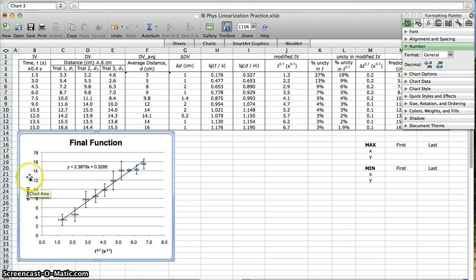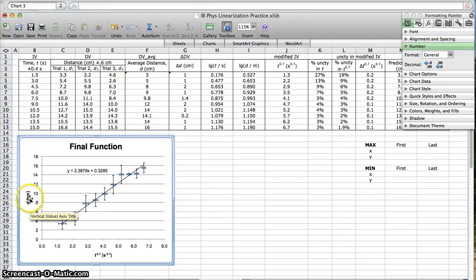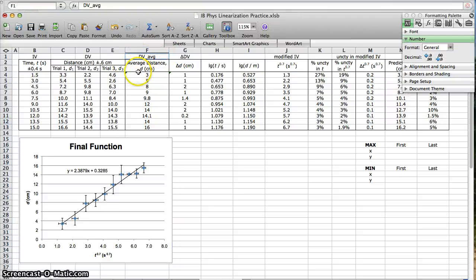This has the average dependent variable on the y, so d in centimeters. Where's that? D in centimeters. Oh yeah, that's my average dependent variable, the average of the three trials. That's on the y-axis. The x-axis is the modified independent variable, time to the 0.7.